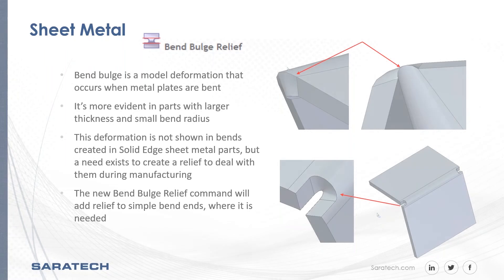The next section we'll get into is the bend bulge release. The bend bulge is a model deformation that occurs when metal plates are dented. There is more evidence in a part with larger thickness and a small bend radius. The deformation is not shown in the bends created in solid-edge sheet metal parts, but a need exists to create a relief to deal with them during manufacturing. This is an enhancement that people were asking for.